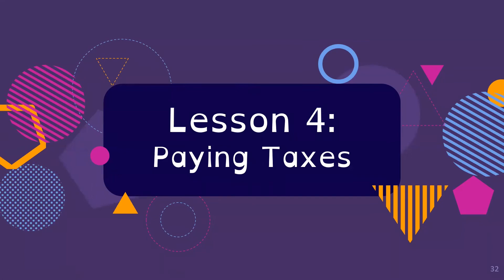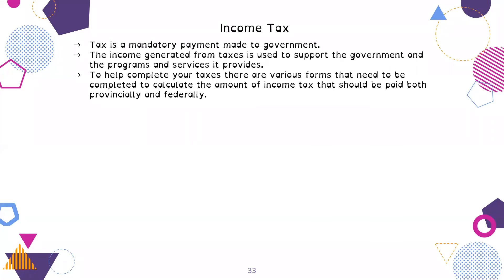Lesson number four, paying taxes. As we mentioned before, income tax comes automatically off of your paycheck. It's one of the standard deductions. It's a mandatory payment made to the government. The income generated from taxes is used to support the government and the programs and services it provides. This is medical care in Canada, education, our roads, our fire departments, our police departments, all of these things, as well as our government.